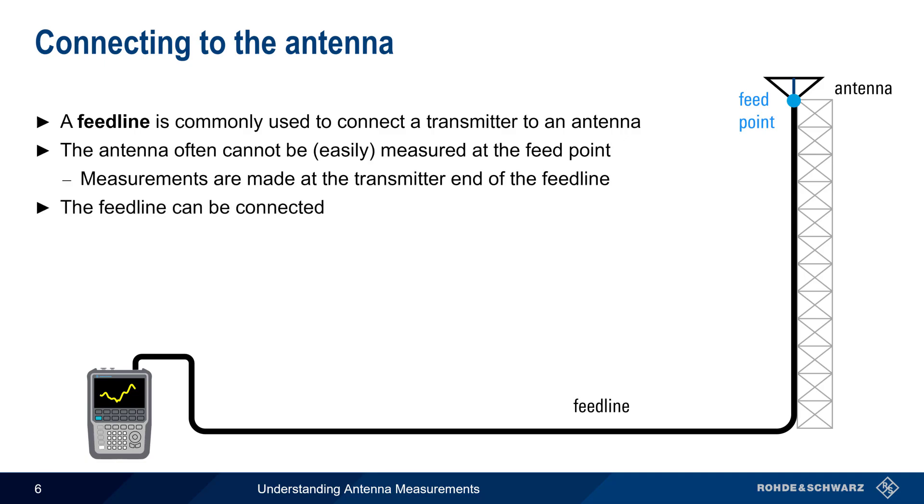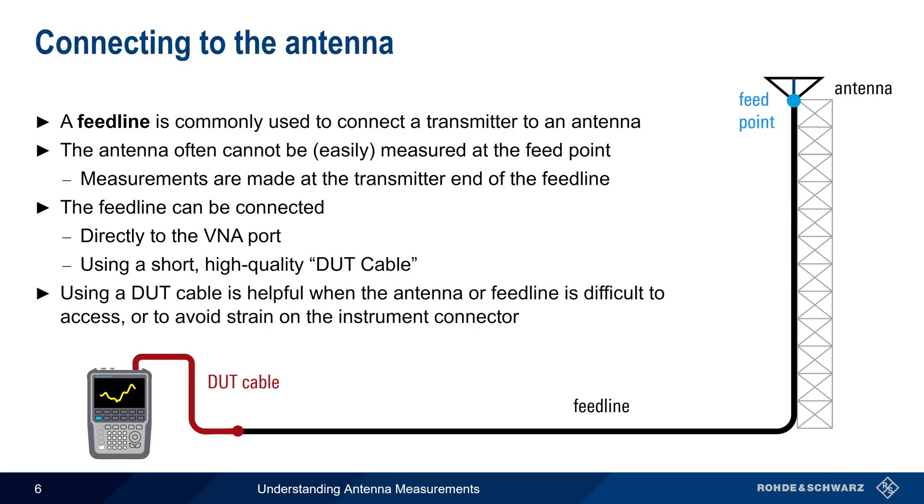There are two methods of connecting a feed line to a VNA. The first is simply connecting the feed line directly to the VNA port. The second is using a short, high-quality DUT or Device Under Test Cable. This is often done for ease of attachment, or to avoid strain on the instrument connector.